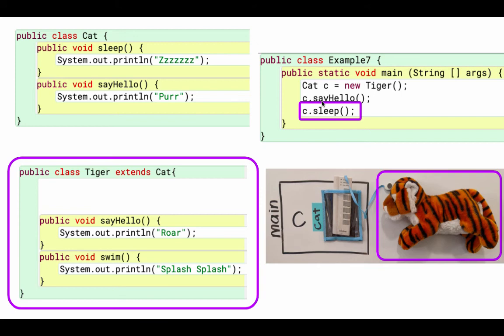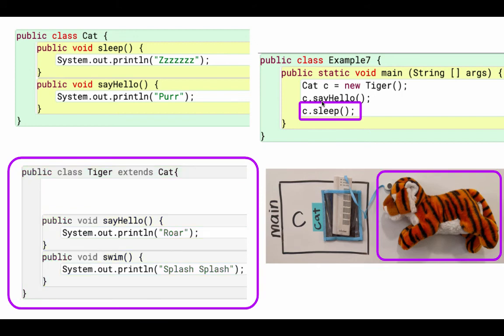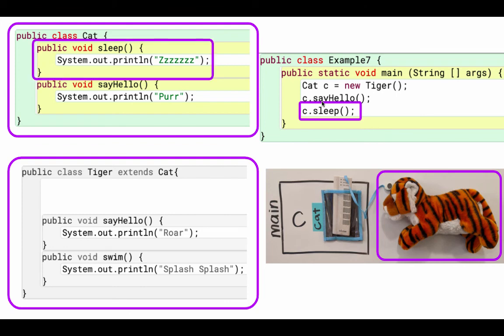Whenever we don't find a method in a class, we look in the parent class. So now I'm going to look in the Cat class, and I do find a sleep method.